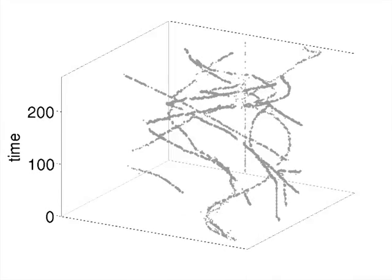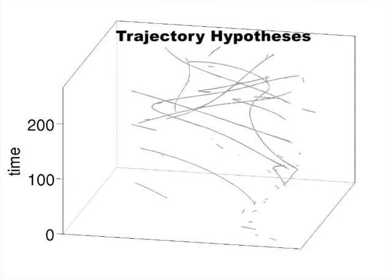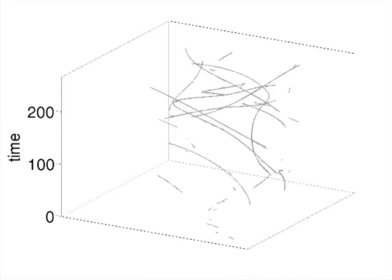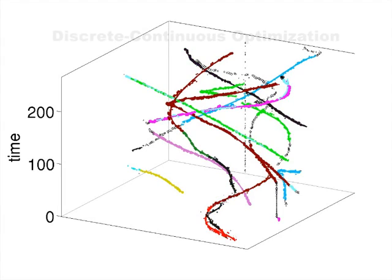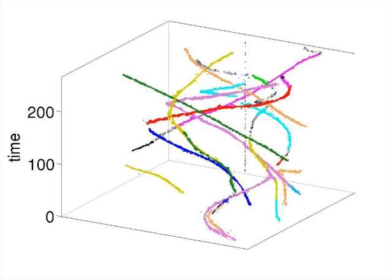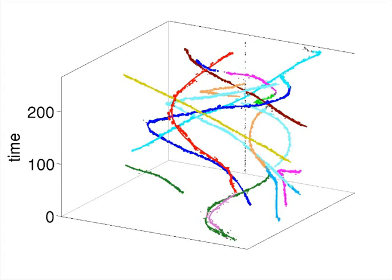Then, given the unlabeled detections and a set of initial trajectory hypotheses, an alternating optimization scheme performs data association on the detections and trajectory estimation in continuous space by minimizing a single discrete continuous objective.